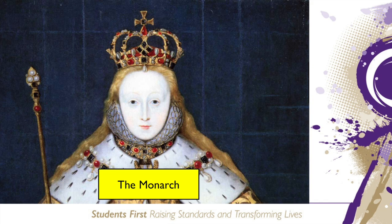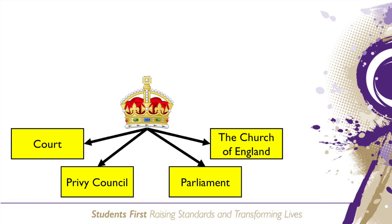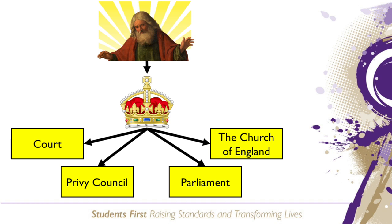Let's dive straight in. We will start with the monarch. There were many parts of the Elizabethan Government: the Court, the Privy Council, and Parliament. At the top of all of this sat the monarch. They alone had the power in the land. This was because it was believed they were appointed by God. The monarch was in charge of the church and decided when to call sessions of Parliament.